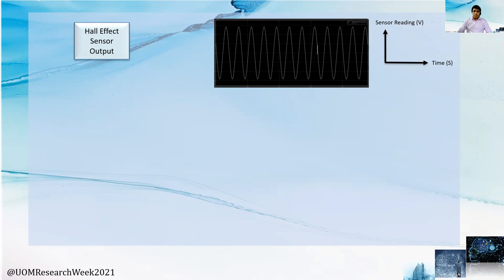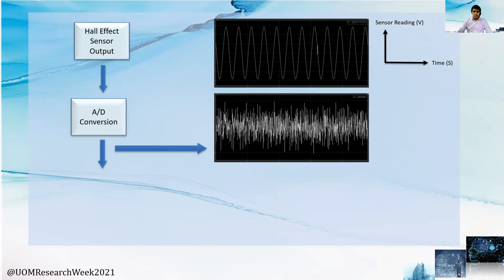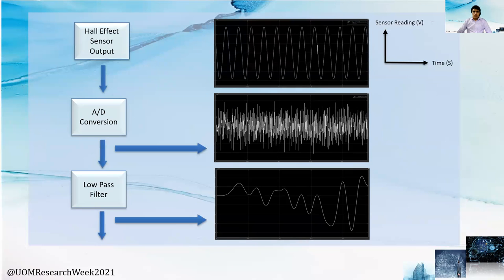Theoretically, the sensor outputs a sinusoidal wave related to the magnetic flux density. But in a practical scenario, during A to D conversion, it captures the sinusoidal signal together with its sensor noise component. We consider this noise effect by adding white Gaussian noise with a signal-to-noise ratio of 12.5 dB into our simulation. Then, we send this data through a low-pass filter to minimize the noise effect. As it is not practical to achieve 100% noise filtration, we have further improved our algorithm to minimize the remaining noise component and enhance system reliability.